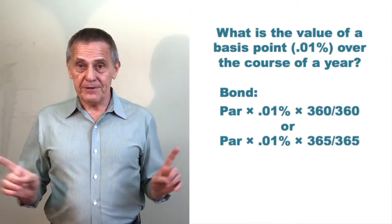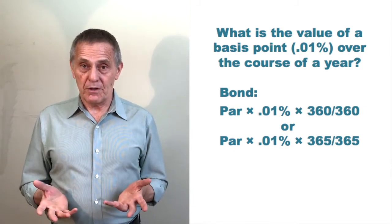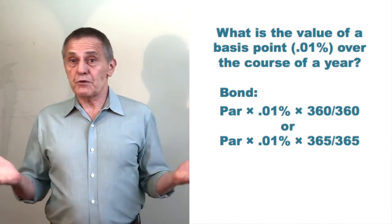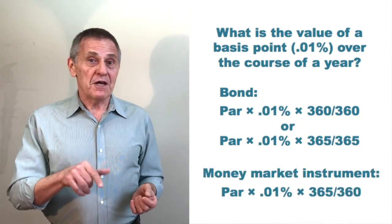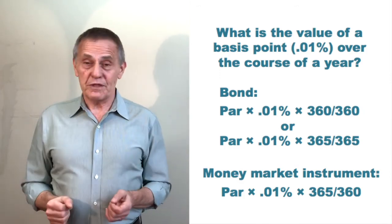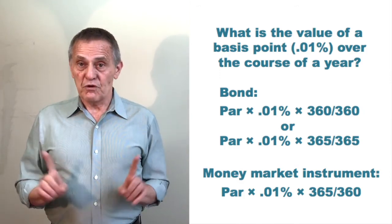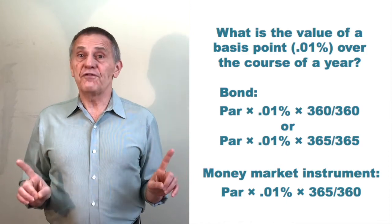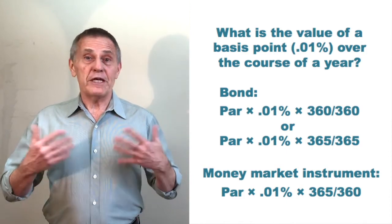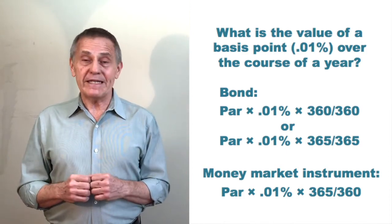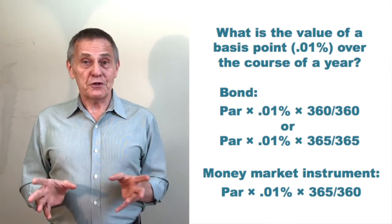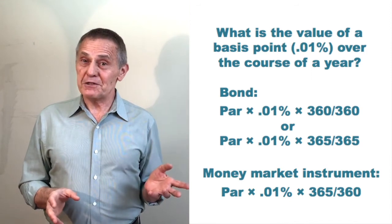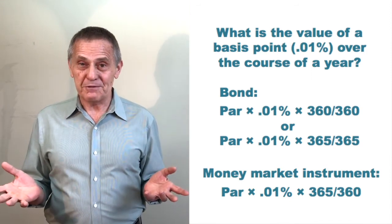Well, at least for a non-leap year, there's 365 days in the year. But remember, on money market instruments, the day count is actual over 360. So for a money market instrument that runs for a full year, you're actually earning 365/360ths of whatever the annualized rate on that security is. So it turns out that a money market basis point is more valuable than a bond basis point.